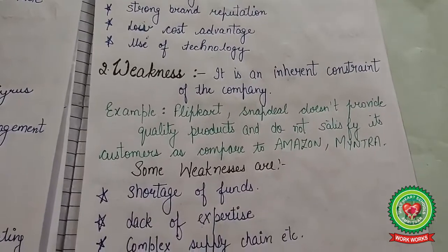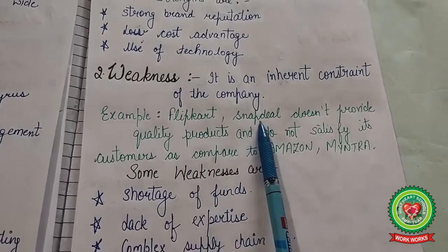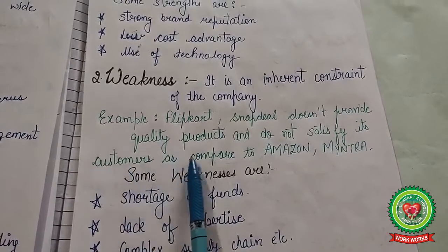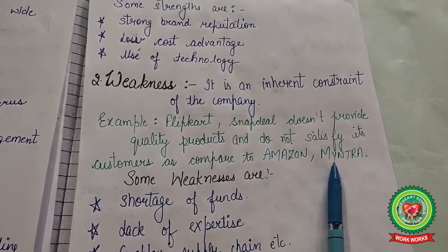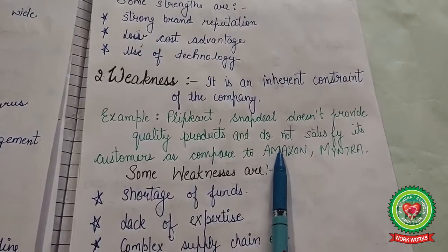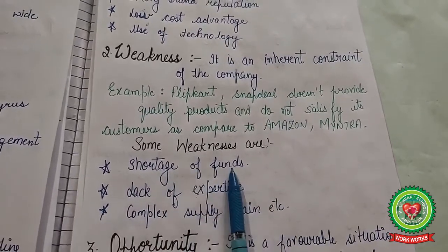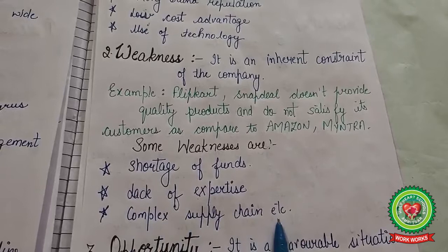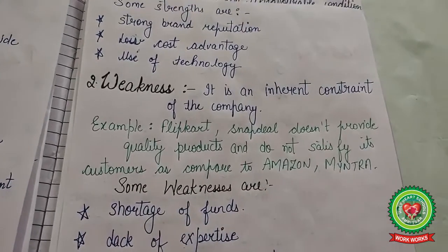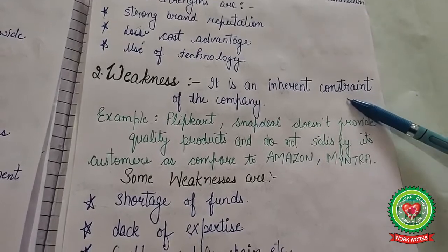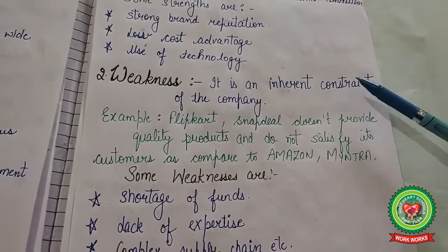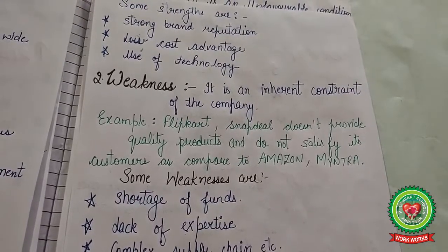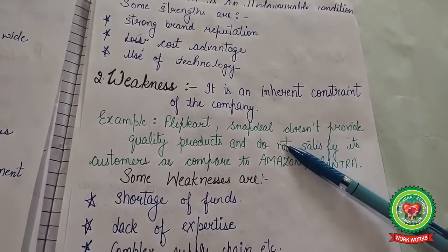Regarding weakness in detail: Flipkart and Snapdeal do not provide quality products and do not satisfy customers as well as Amazon and Myntra — this is a weakness. Other weaknesses include shortage of funds, lack of expertise and knowledge, and complex supply chains. Weakness is an inherent constraint or limitation of the company which creates disadvantages, and these are areas where the business needs to improve to remain competitive.